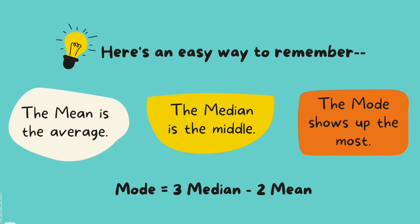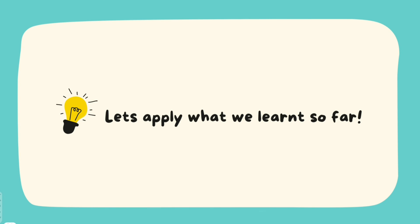Just to easily remember: mean is the average, median is the middle, and mode shows up the most. And there is a relationship between mean, median, and mode: mode equals 3 times median minus 2 times mean. That is the relationship between the three central tendencies. We have to apply whatever we have learned to a real data set — but since this video went a little long, we will put that out as a separate video, and I will include a link so you can easily navigate to it.